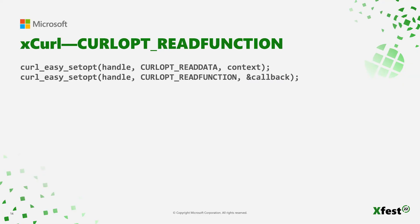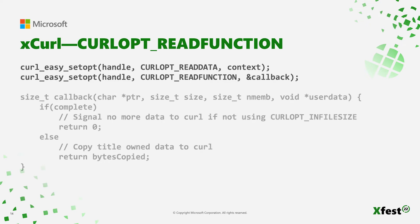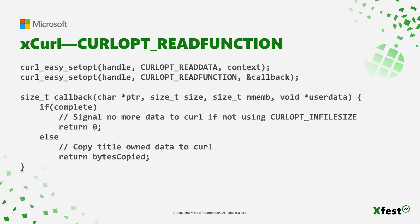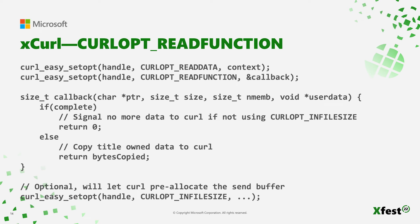Another way to send data is through the read function. The read function looks a lot like the write function, although instead of reading data out of the buffer it provides, you are copying data into this buffer. Due to the way WinHttp works, we have to know how much data you're sending before we can actually send the request. So if you have not provided that information to Xcurl, internally Xcurl will buffer all the data that you return and continuously grow its internal buffers until you return zero from your read callback, indicating that you have no more data to send, at which point it can then send the request. If you do know how much data you're going to send, you can use the CURLOPT_INFILESIZE option to fill in how much data you're going to send, and then instead of continuously growing a buffer internally, Xcurl can make one allocation upfront and then send your request.